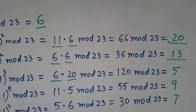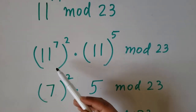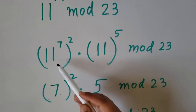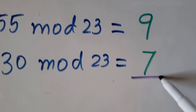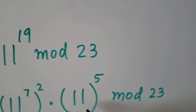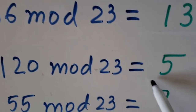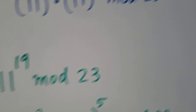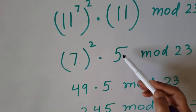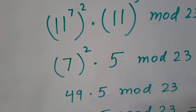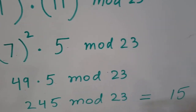Picking small numbers makes our multiplication easier. The value of 11 to the power 7 we already calculated as 7, and 11 to the power 5 we already calculated as 5. Substituting these values: 7 squared is 49, times 5 is 245. 245 mod 23 is 15. This is our answer.